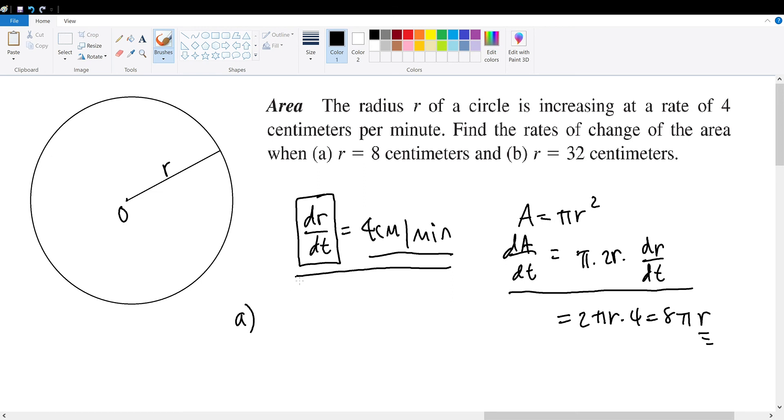So in the first part, when the radius is equal to 8 centimeters, how is the area changing? Well, we simply apply when r is equal to 8 to get 8 times pi times 8, which is equal to 64 pi centimeters squared per minute, meaning that when the radius is equal to 8 centimeters, the area of this circle is changing at a rate of 64 pi centimeters squared per minute.